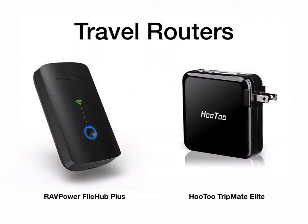It's happened to all of us. You're at a conference, a hotel, teaching in a new classroom — there's an Ethernet connection in the room but Wi-Fi is not available. You may be traveling with a 30-foot long Ethernet cable, but chances are this isn't the case. You could use your smartphone as a hotspot, but an easier option is to invest in a cheap RavPower FileHub Plus or HooToo TripMate Elite wireless travel router. These battery-powered routers create their own Wi-Fi networks and can be used to bridge an existing Ethernet connection, as well as sharing files if you plug in a USB drive.